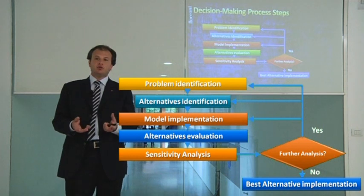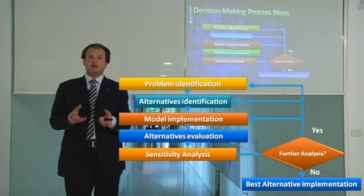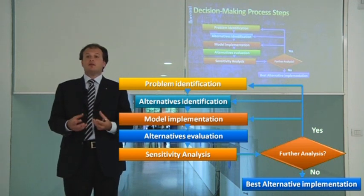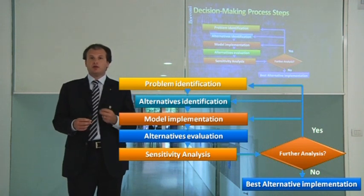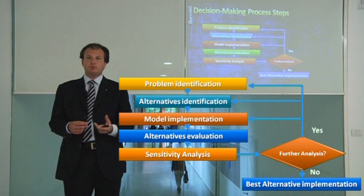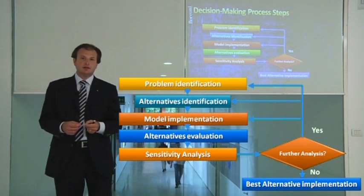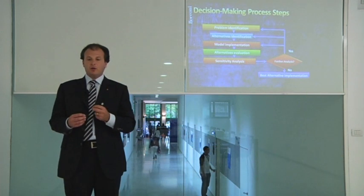Then there is the implementation of the model — someone has to actually build the mathematical equations that tell you what is best. Then there is the identification of the best alternative: you run the model and it indicates what is the best policy to implement. Finally, the last step is sensitivity analysis, which is important because it tells you whether your decision-making process has been completed or not.